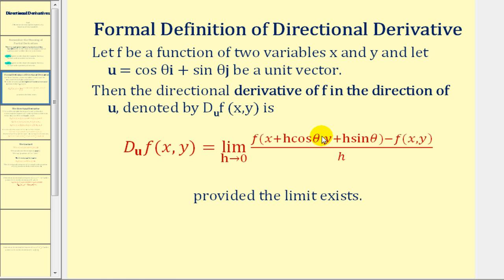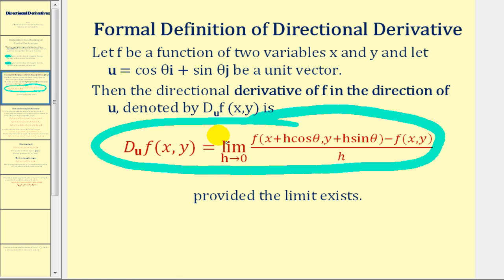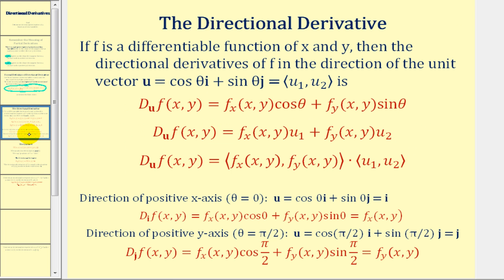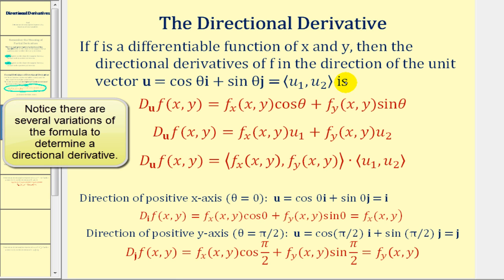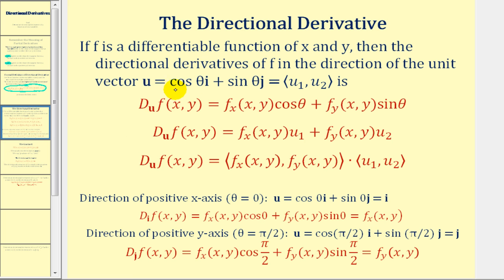The formal definition of the directional derivative involves a limit definition just like any other derivative, but for this video we're going to use the working formula. If f is a differentiable function of x and y, then the directional derivative of f in the direction of the unit vector — expressed as cosine θ i plus sine θ j, or in component form — is the partial of f with respect to x times cosine θ plus the partial with respect to y times sine θ. We can also replace cosine θ and sine θ with the x and y components of the unit vector.